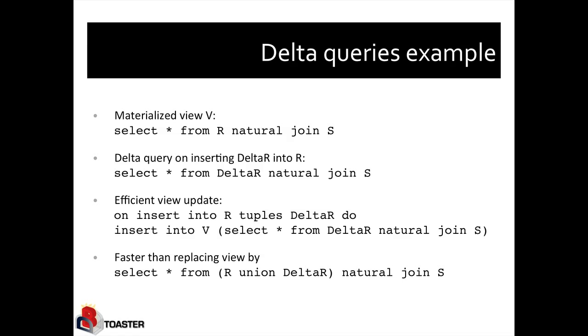So here is an example. Suppose we have a materialized view of the query select star from R natural join S. I will avoid talking specifically about the schema of R and S, so I will only say that there is a natural join to be done. Now assume we want to insert some tuples into R. Let's assume this set of tuples is called delta R. Then we can define the delta query for the view V with respect to the change of R using delta R as select star from delta R natural join S.